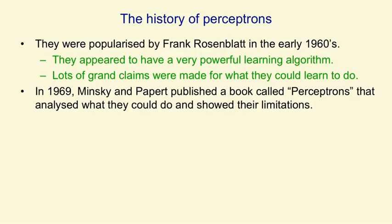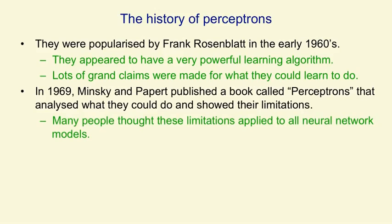In 1969, Minsky and Papert published a book called Perceptrons that analysed what perceptrons could do and showed their limitations. Many people thought those limitations applied to all neural network models, and the general feeling within artificial intelligence was that Minsky and Papert had shown that neural network models were nonsense or couldn't learn difficult things. Minsky and Papert themselves knew they hadn't shown that — they'd just shown that perceptrons of the kind for which the powerful learning algorithm applied could not do a lot of things by learning. But that result got wildly overgeneralised, and when I started working on neural network models in the 1970s, people kept telling me that Minsky and Papert had proved these models were no good.